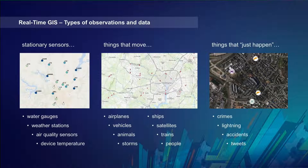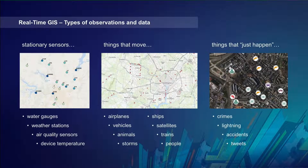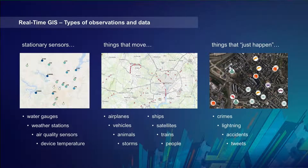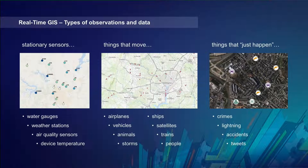Moving things include airplanes, trains, even animals wearing radio collars that we want to track. We also have sensor networks that are not necessarily moving — like water gauges and air quality sensors. All of this is streaming data that we can bring into GeoEvent Server to do real-time analytics, reporting, and notification.